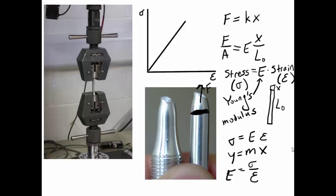So maybe 100 psi over 2%. So 2% is 0.02. So E is equal to this number. You can see that E has units of psi as well because 0.02 doesn't have units. So the units for Young's modulus are also pounds per square inch.